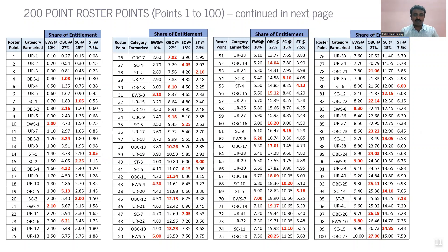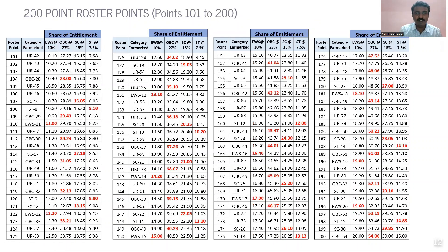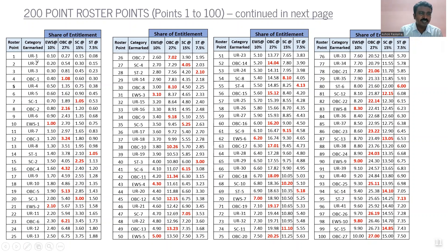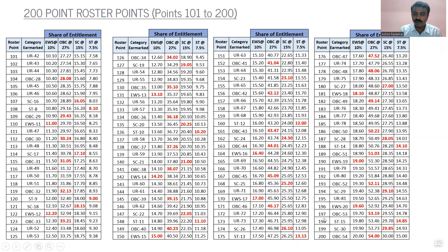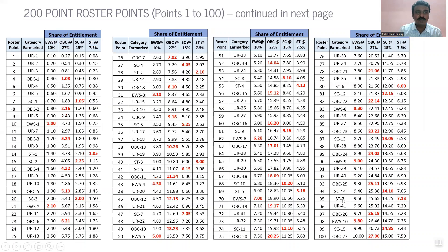All you need to understand is that there exists a roster with roster points one onwards till 200. Against each roster point, there is a category that is mentioned. So if it is the first roster point, it belongs to the UR category. The second roster point is also against UR category. The fourth is against OBC and so on as we move forward to 20 and SC, etc. At the end of 200 seats, OBC would have 27%, SC would have 15% of 200 seats, ST would have 7.5%, EWS would have 10%, and the rest for UR.